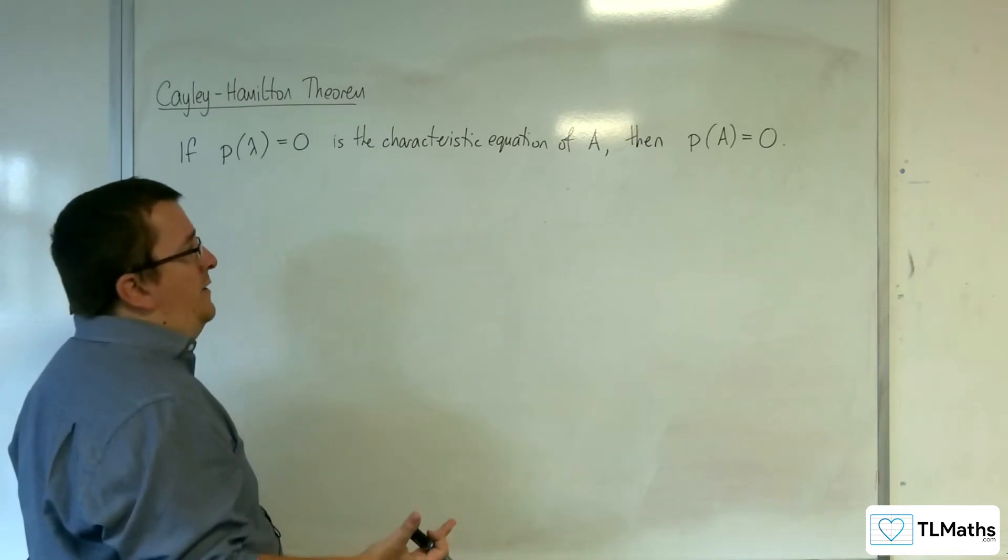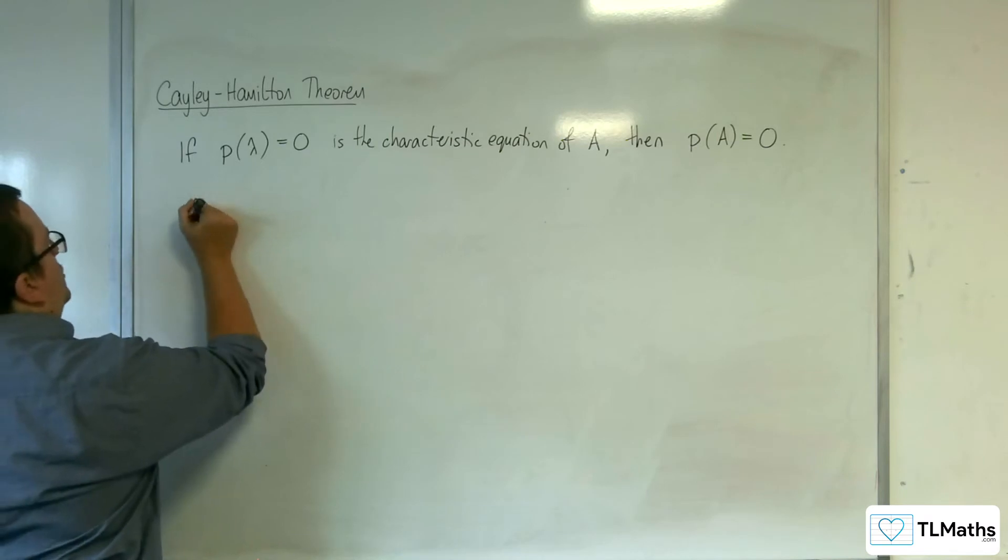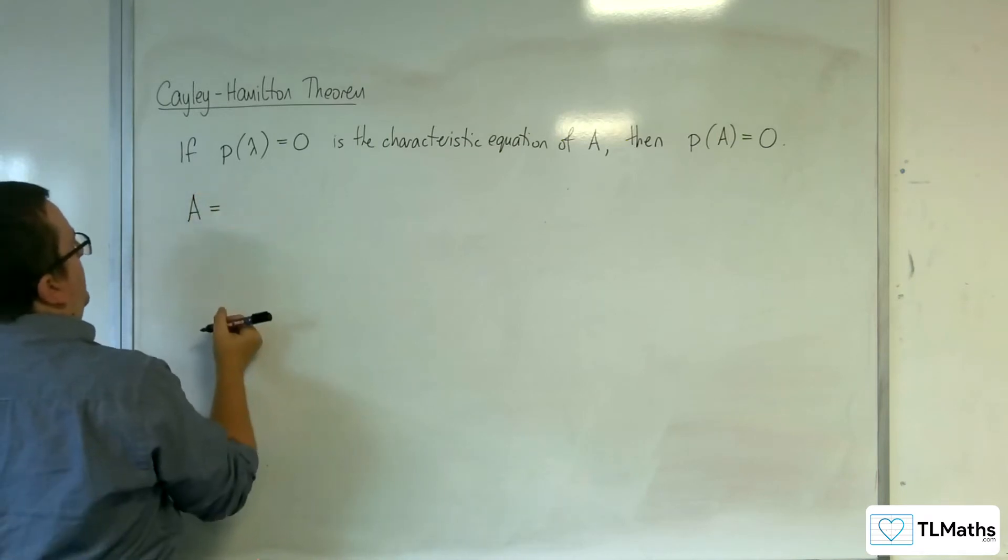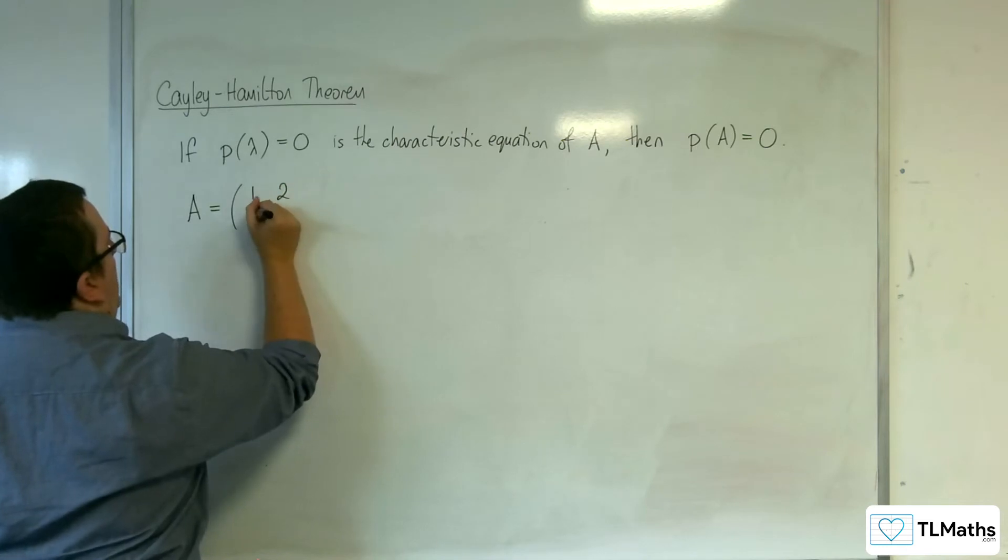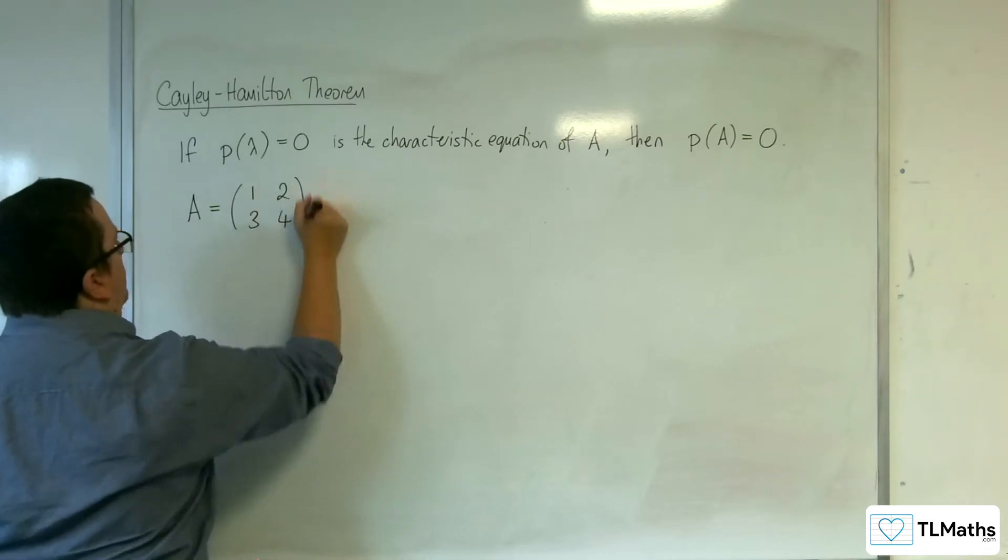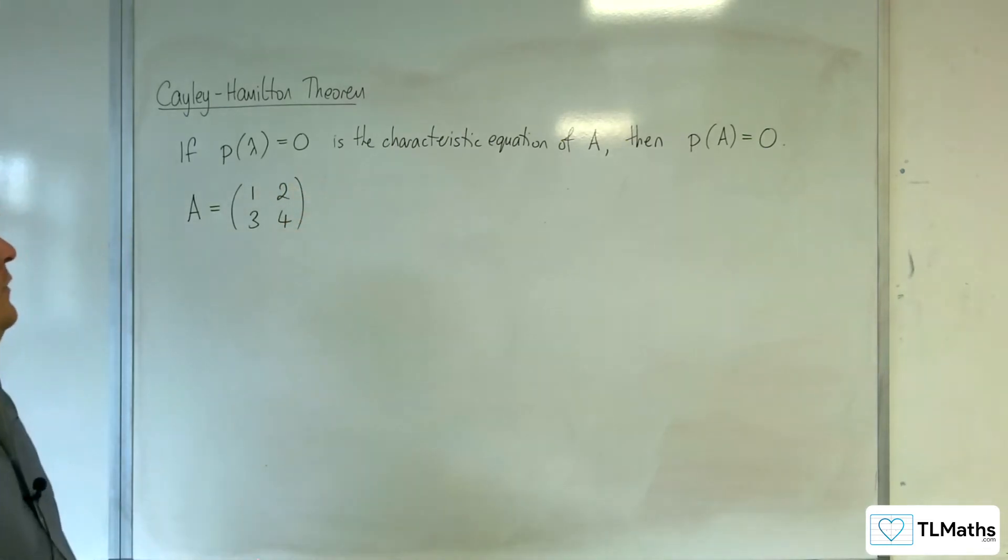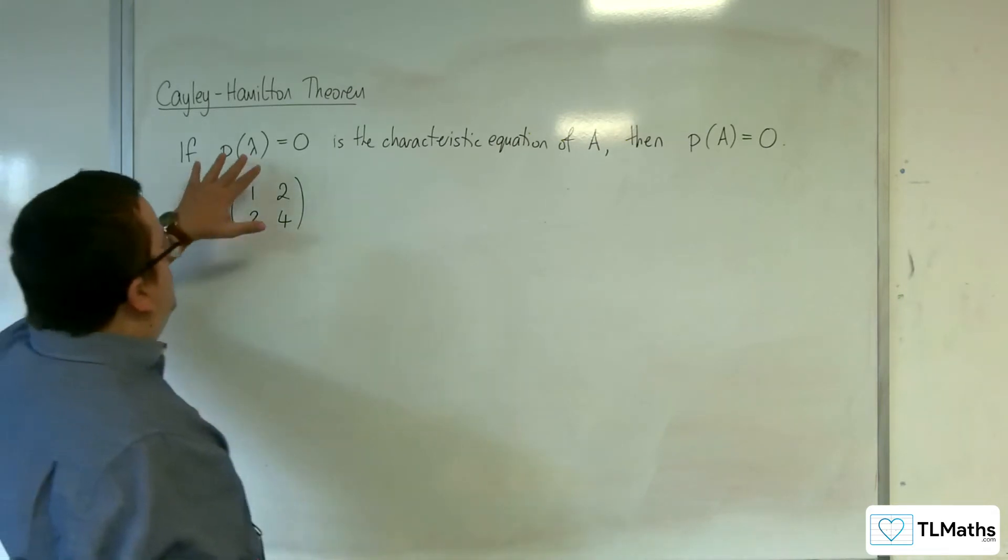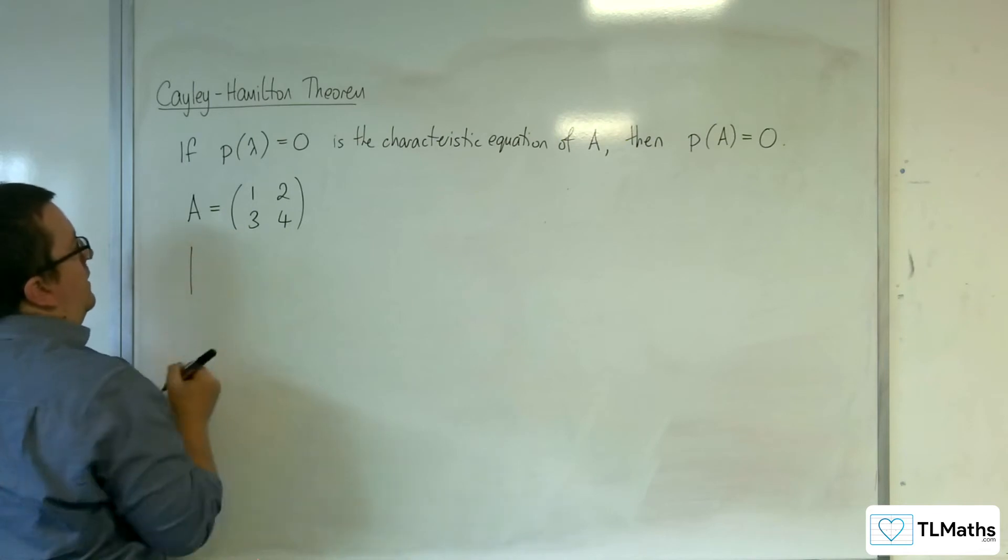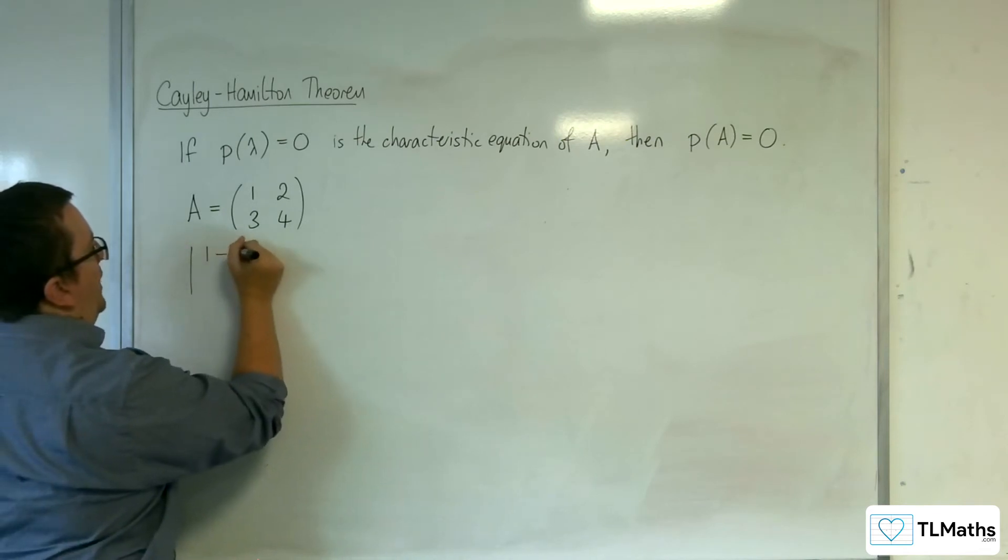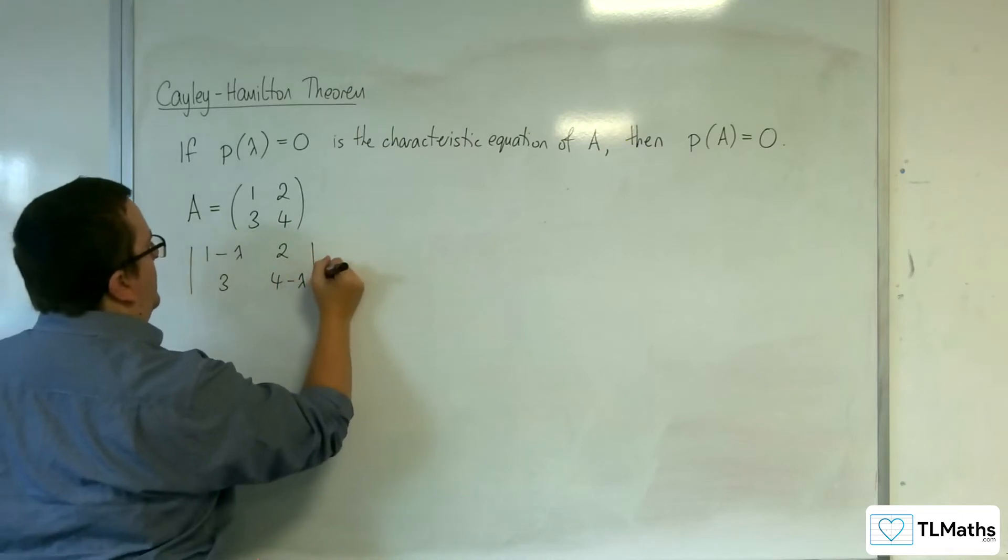So let's say we had a matrix A. So let's just use something basic. So we'll go with a 2 by 2 matrix. So let's go with 1, 2, 3, 4. So the characteristic equation for that would be that we've got the determinant, 1 take away lambda, 2, 3, 4 take away lambda equals 0.